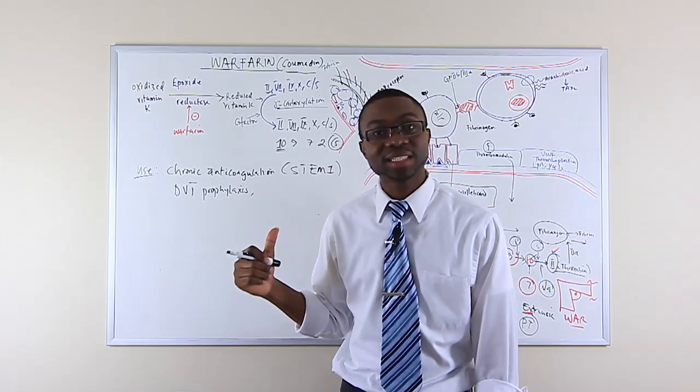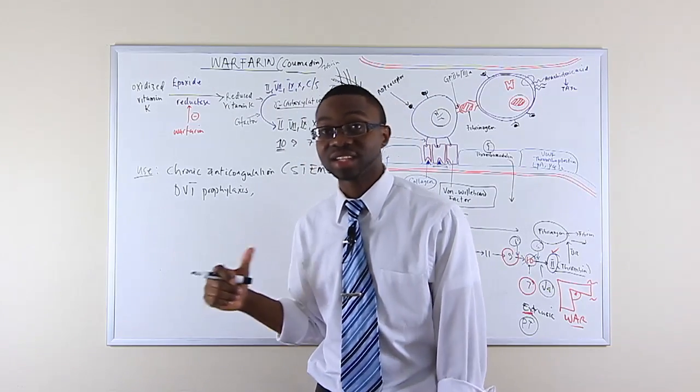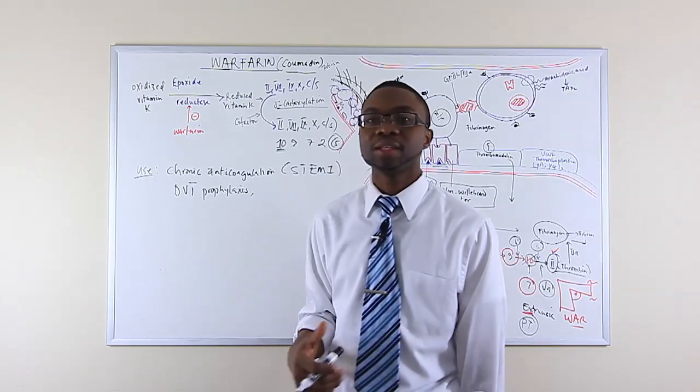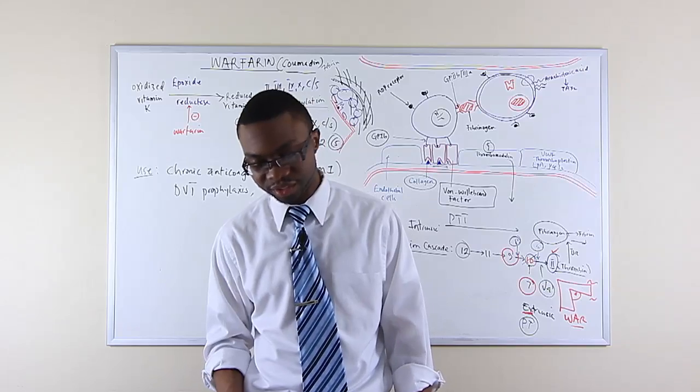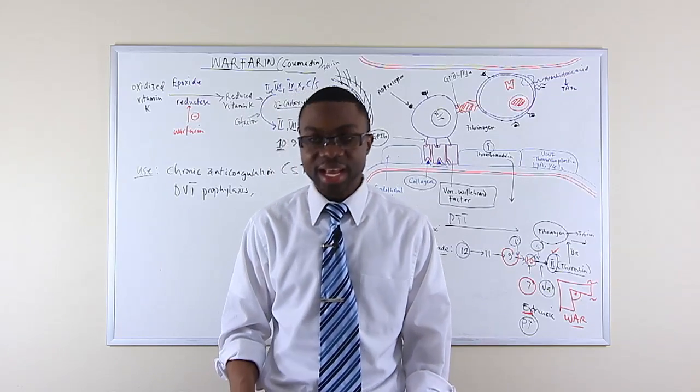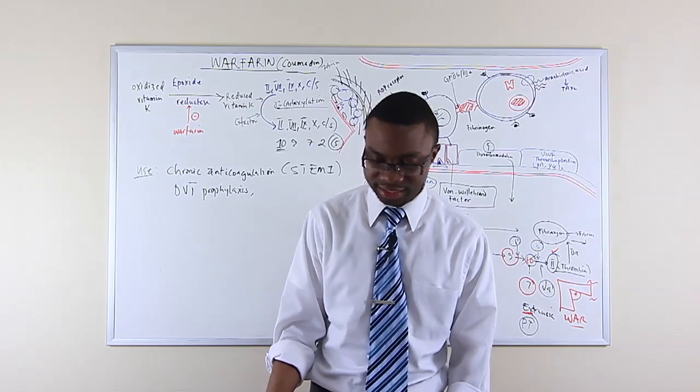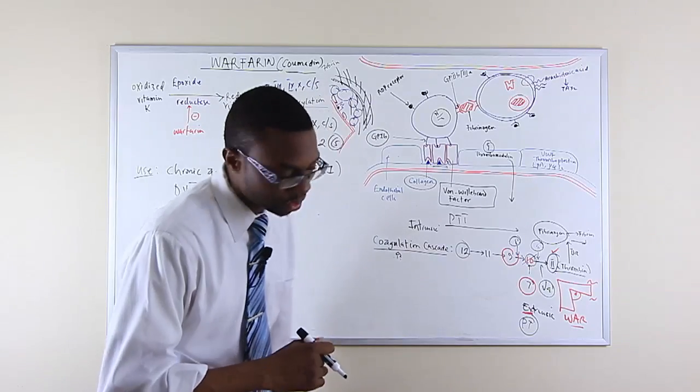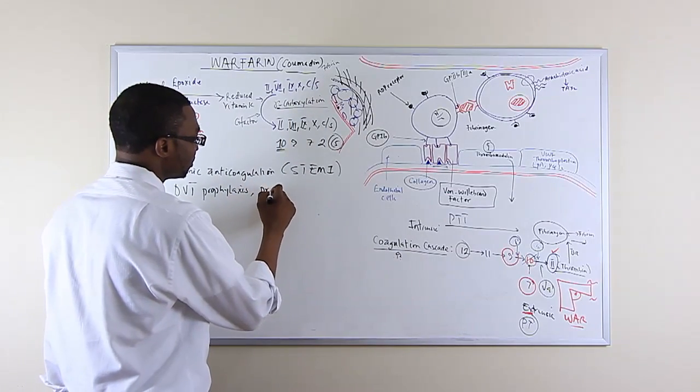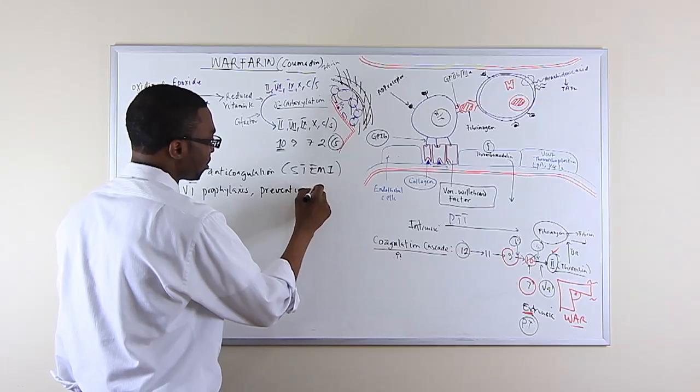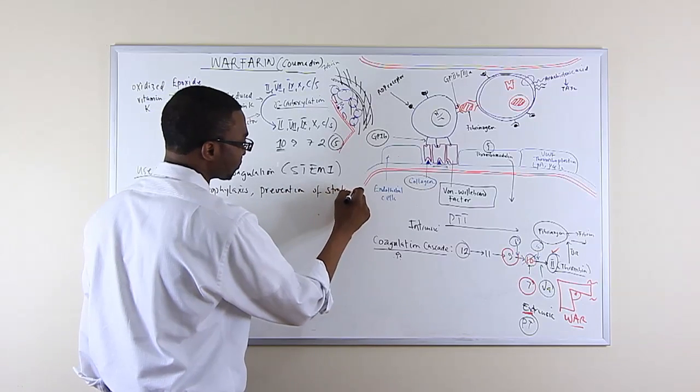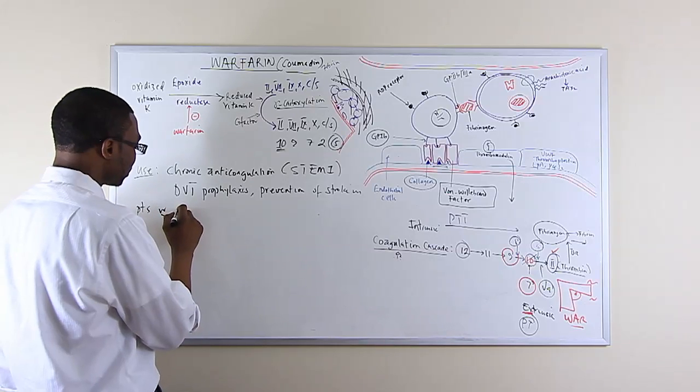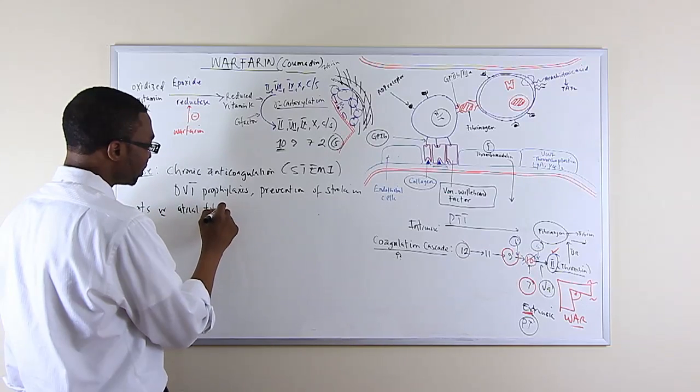Deep venous thrombosis prophylaxis. So if a patient has a DVT, you put them on warfarin. Why? Because when their blood is not thin, that clot is going to go and form a pulmonary embolism. So when you put them on Coumadin, the patient will have thinner blood and they'll have less likelihood of developing pulmonary embolism. It's also used for protection and prevention of a stroke in a patient with atrial fibrillation.